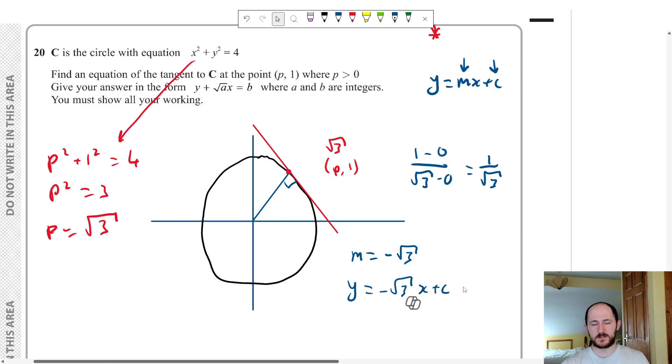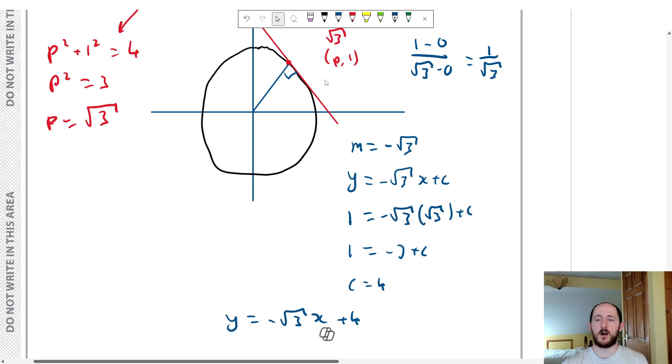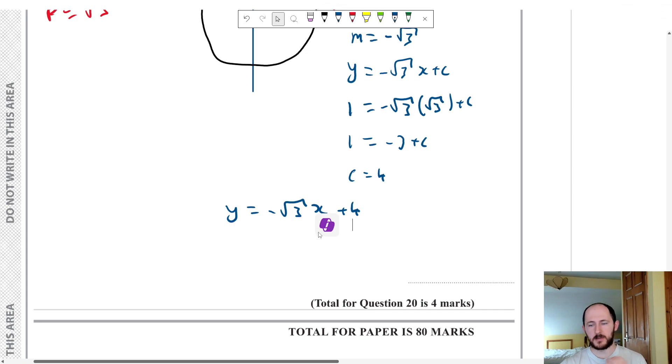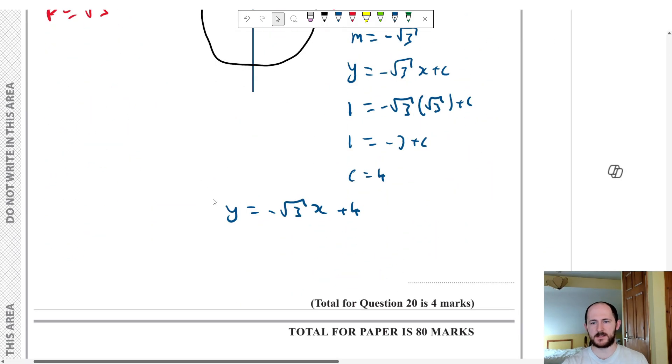Then we can just sub in the coordinate to find the value plus c. And it says, give your answers y plus root eight. Yeah, whatever, cool. So, y is one, x is root three. Now, root three times root three is just three. So that's minus three plus c. So c equals four. So your answer is, well, actually, I'm going to check myself there. Because our answer has to be in this form. If I left it like this, I'd only get three out of four. So please, please, make sure when you sit in that exam, you're checking what the question's asking you for. So all they want me to do is move the x over to the other side. That's it.